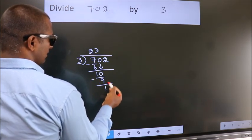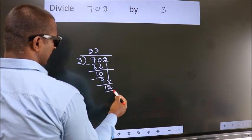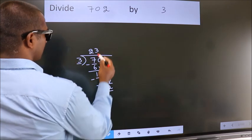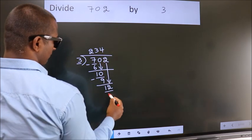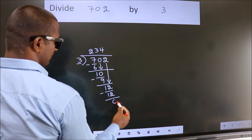After this, bring down the beside number. So 2 down, so 12. When do we get 12 in the 3 table? 3 times 4 equals 12. Now we subtract. We get 0.